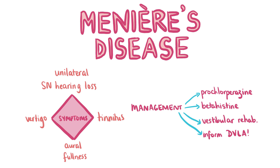Meniere's disease is a disease of unknown aetiology that causes a build-up of endolymph within the membranous labyrinth of the inner ear. Patients present with recurrent episodes of unilateral sensorineural hearing loss, vertigo, aural fullness and tinnitus, in association with vomiting and diarrhoea. On examination the patient will have rotational vertigo and a positive Romberg's test. Buccal or intramuscular prochlorperazine can be given in acute attacks, and betahistine and vestibular rehabilitation exercises can be used for prevention. The patient should inform the DVLA about their condition and avoid driving until symptom control is achieved.